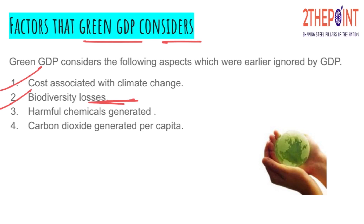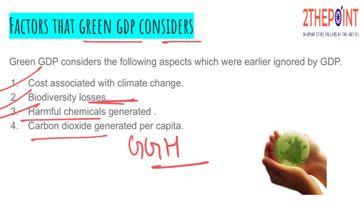This is basically a vicious cycle: harmful chemicals generated during production processes heat up the environment, causing depletion of the ozone layer, global warming, rising sea levels, and then many species dying in the sea as well as on land. Carbon dioxide and other greenhouse gases generated per capita during all of this production process — all these factors were initially ignored by the GDP calculation, which is why the Green GDP concept has evolved.